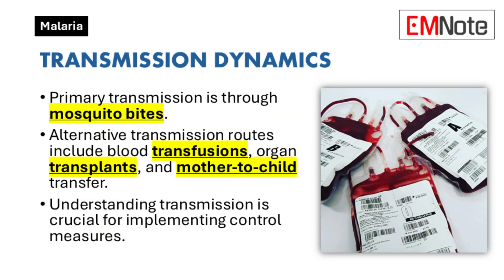Transmission Dynamics: The primary mode of transmission is through mosquito bites. However, malaria can also spread via blood transfusions, organ transplants, sharing contaminated needles, or from mother to child during pregnancy or childbirth. Understanding these transmission routes is crucial for implementing effective control measures.